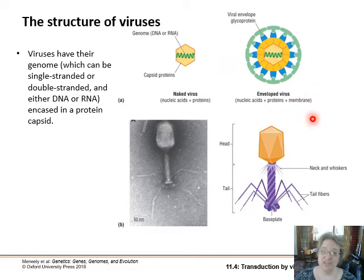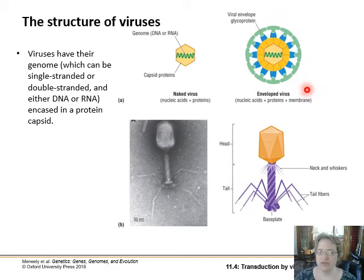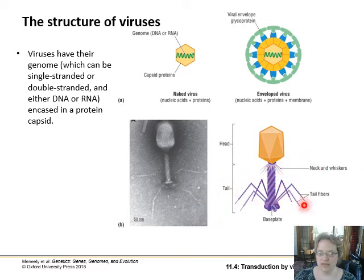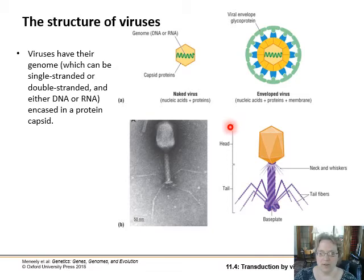The virus doesn't build this membrane — a cell will build it — and the virus will bud off into these little glycoprotein coats and phospholipid coats. You can also have different structures coming out of the protein capsid to help it attach to the surface of whatever cell it's infecting. This is the classic sort of bacteriophage.